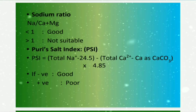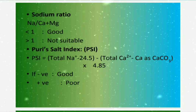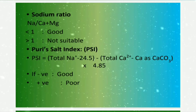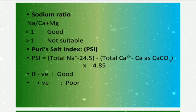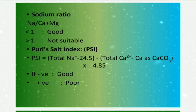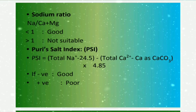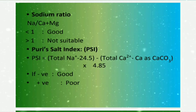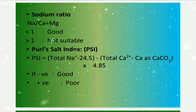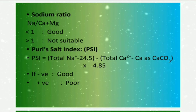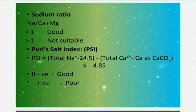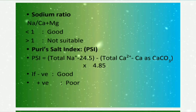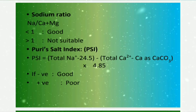A sodium ratio less than 1 is suitable for irrigation; more than 1 is not suitable. The salt index was given by Puri. A negative value of salt index indicates high quality water, while a positive value of salt index is harmful for irrigation purpose.